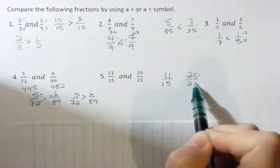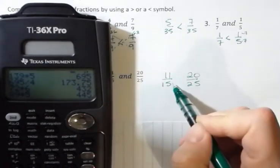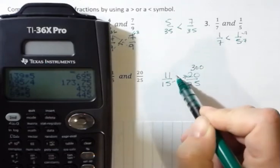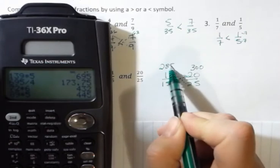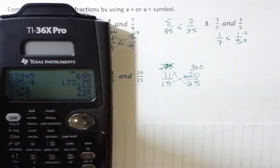We could rewrite this having a common denominator, or we could use that multiplication trick. Fifteen times twenty is three hundred, and twenty-five times eleven is two hundred eighty-five. No, two hundred seventy-five, sorry, two hundred seventy-five.